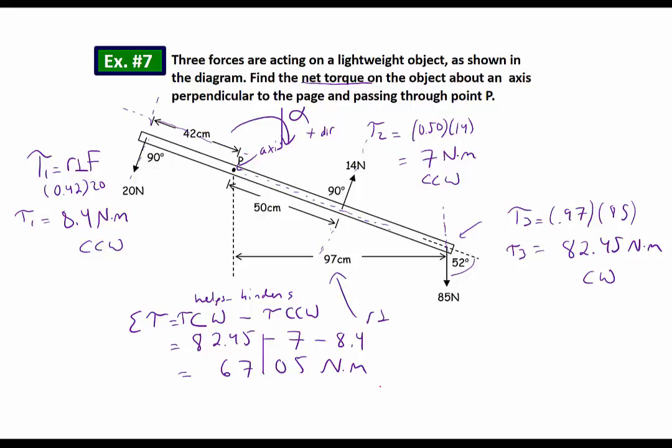And I'm going to throw a direction on there, and that was going to be in the clockwise direction. Or I could say negative 67.05 newton meters, since clockwise is the negative direction. So by convention, clockwise is negative direction, but for my help minus hinder, I just decided to call it the positive direction because that was the direction that the object would start to angularly accelerate due to that torque.